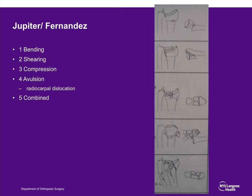Jupiter and Fernandez proposed a mechanistic classification: bending fractures (mostly extra-articular), shearing fractures (analogous to AO type B), compression fractures (C-type with high comminution), avulsions, variations of B-type involving carpal dislocation, and combined high-energy injuries.